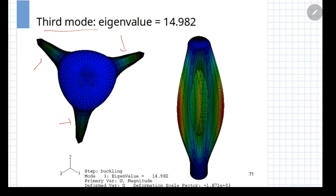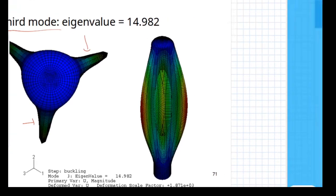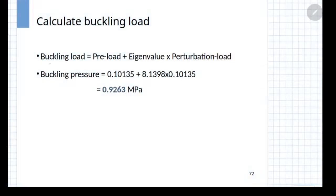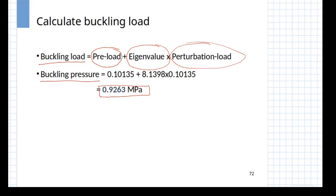The value of the buckling pressure is obtained by using the first mode or the lowest eigenvalue mode. The buckling load can be calculated using the preload which is the design pressure what we are considered and eigenvalue times the perturbation load which is used for the eigenvalue analysis. In our case, the buckling pressure is computed as 0.9263 MPa. This is the pressure which the finite element analysis predicts that the buckling will occur at this particular pressure.